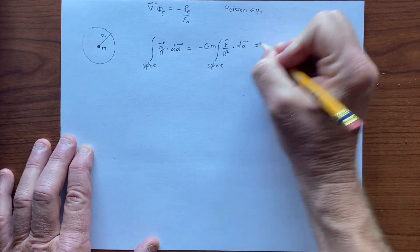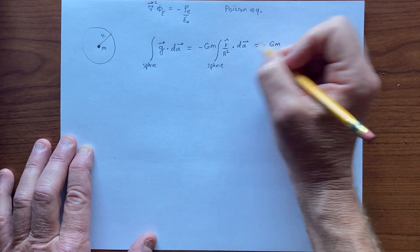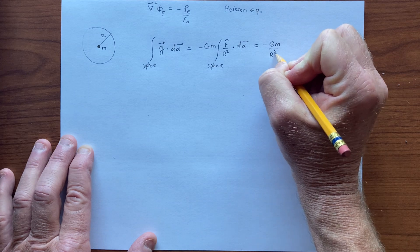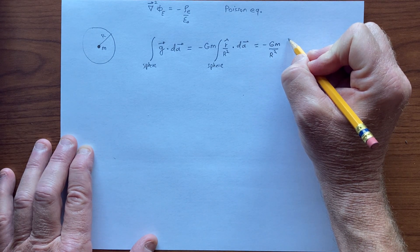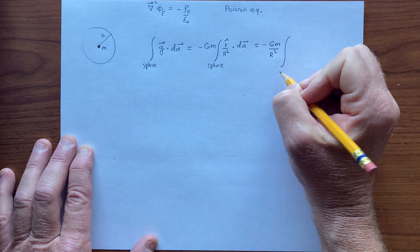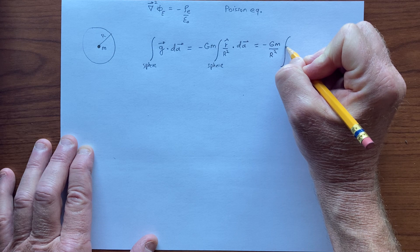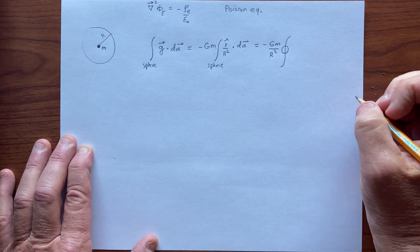And this is minus gm. Again, I could have pulled this out, because this is a constant. And this is an integral over, it's over a sphere. It's also a closed surface, and sort of write it like that, over the sphere.